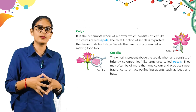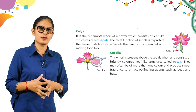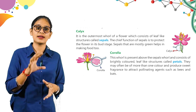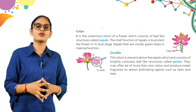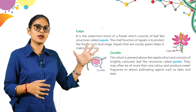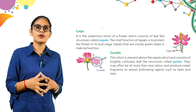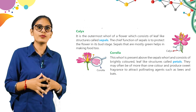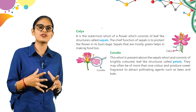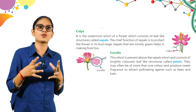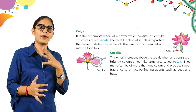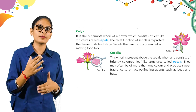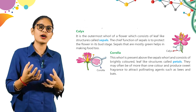The Calyx consists of green sepals in your flower bud that also help make food. The next whorl is the Corolla, present above the Calyx whorl. It consists of brightly colored leaf-like structures called petals. They may often be more than one color and produce a sweet fragrance to attract pollinating agents such as bees. Petals can be different colors or the same color, and they produce fragrance to attract pollinators.